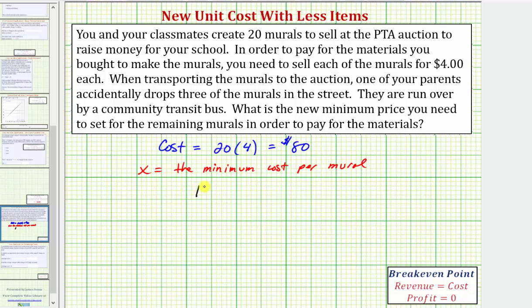Which means 17 times the new minimum cost, which would be x dollars per unit, must be equal to $80. So if we solve this equation for x, we'll know the new minimum cost per mural in order to pay for the materials.